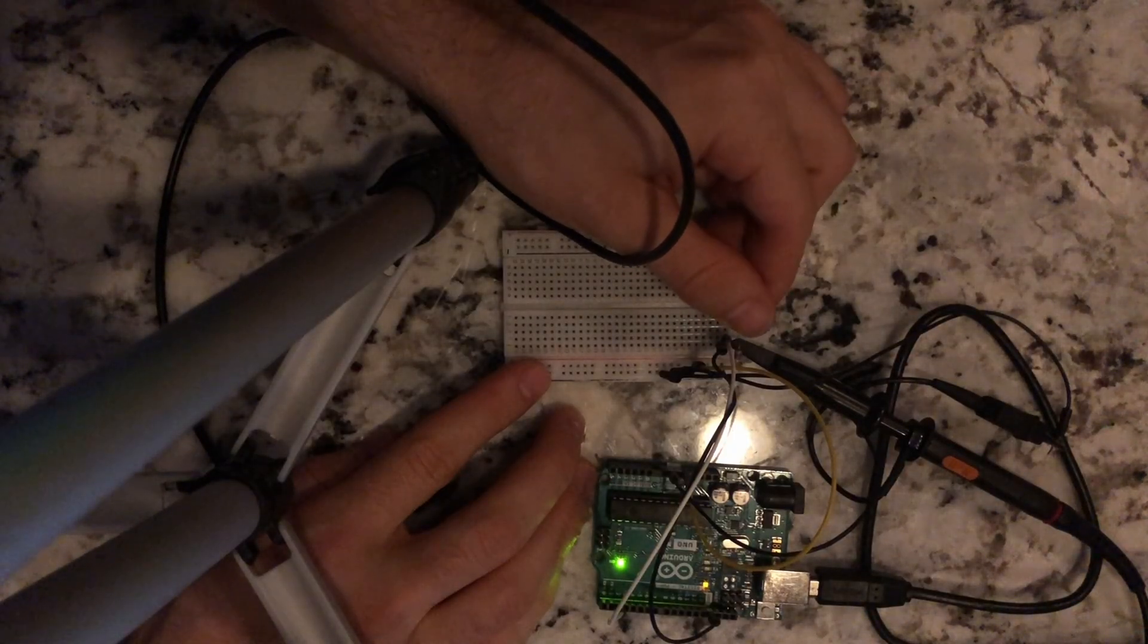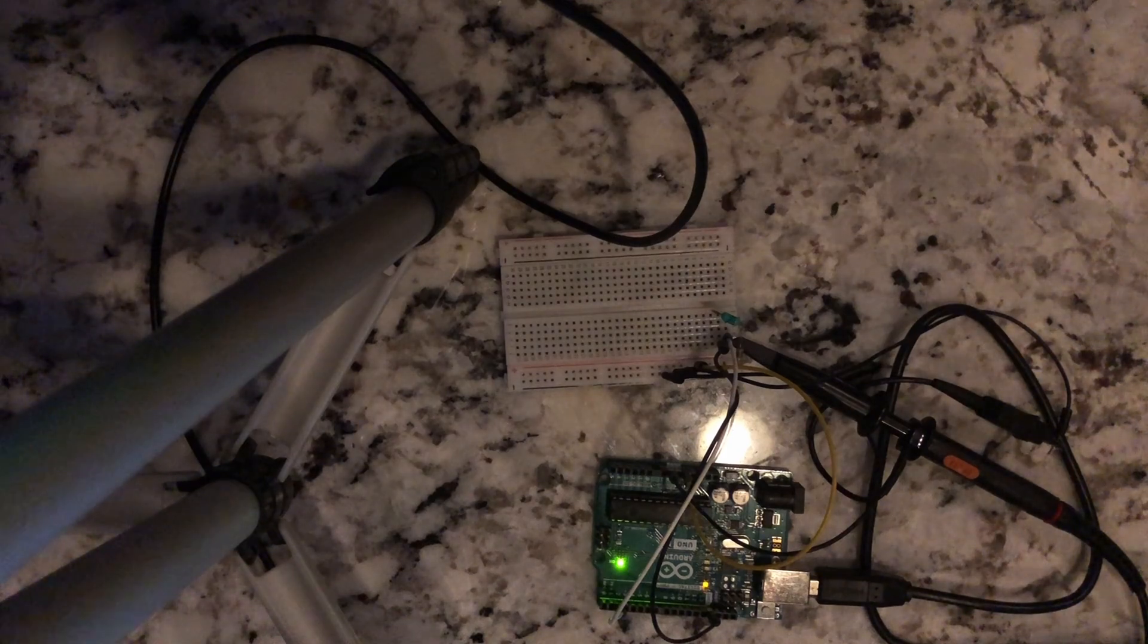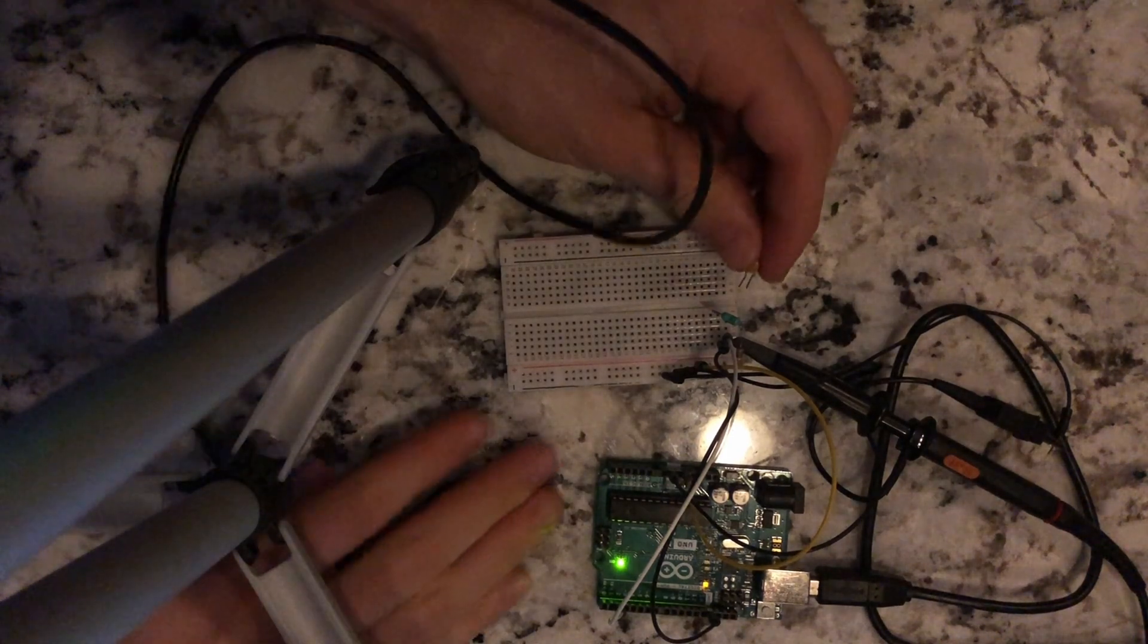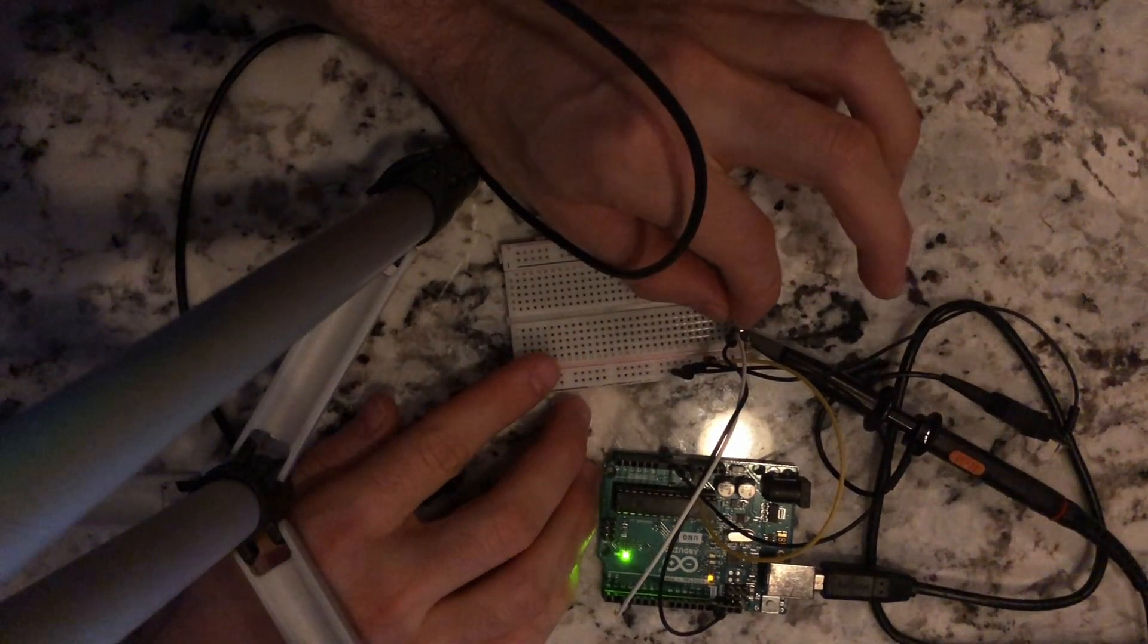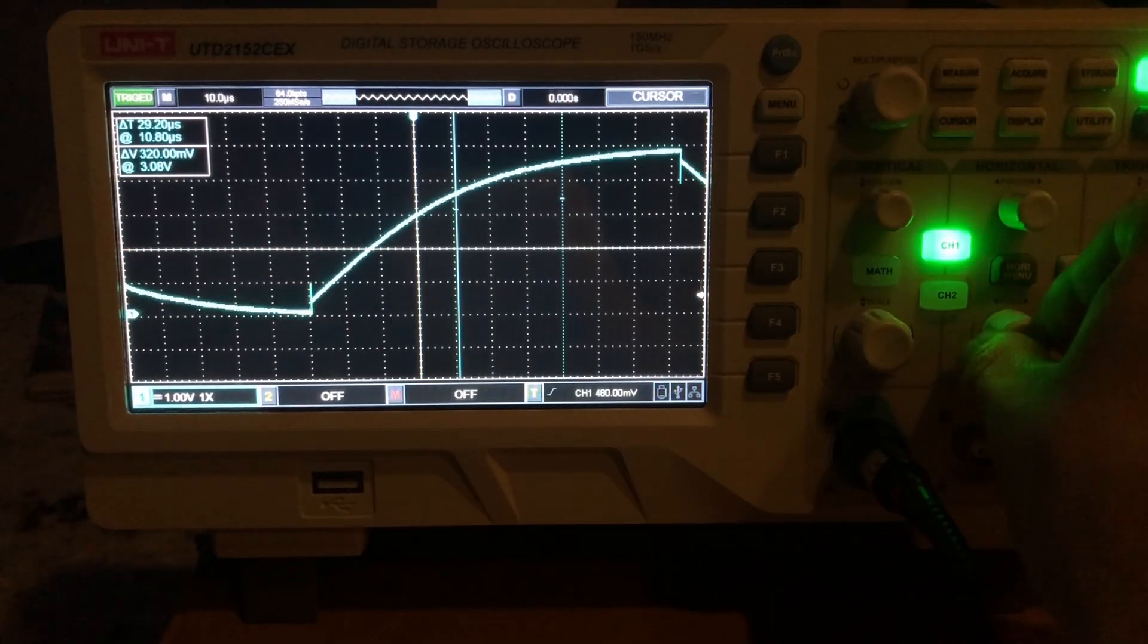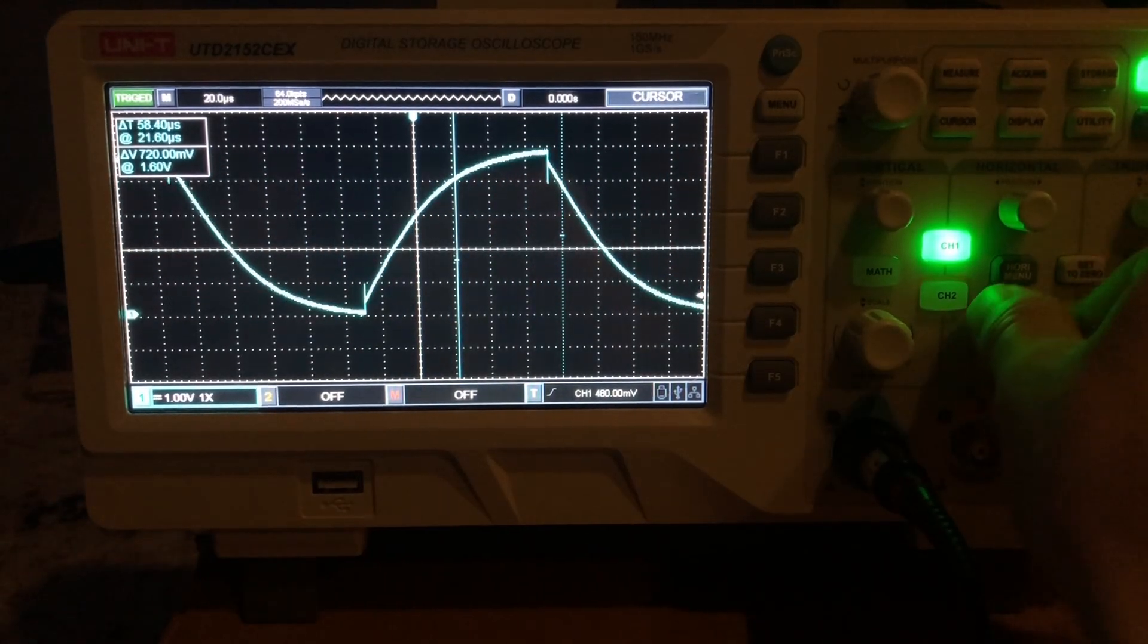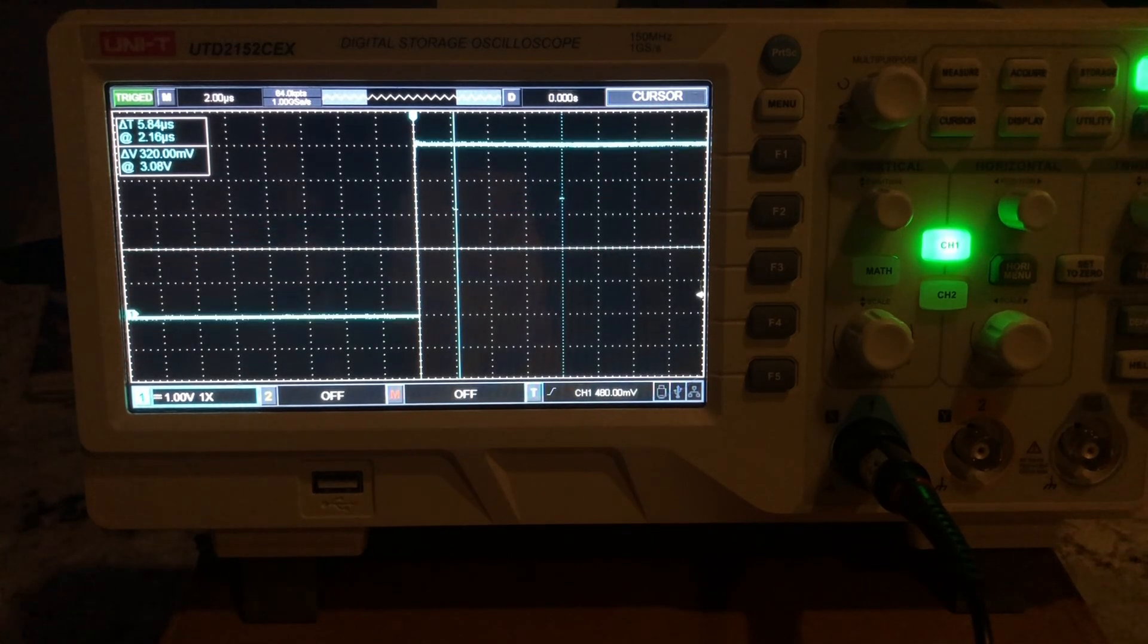When it comes to deciding the value for your I2C pull-up resistors, it is usually a choice between speed and power. By choosing a lower resistor value you'll use more power but will be able to run the data bus at higher speeds. Conversely, a higher valued resistor will dissipate less energy or require you to run the data bus at a slower clock speed to account for the slower rise time of the signal.